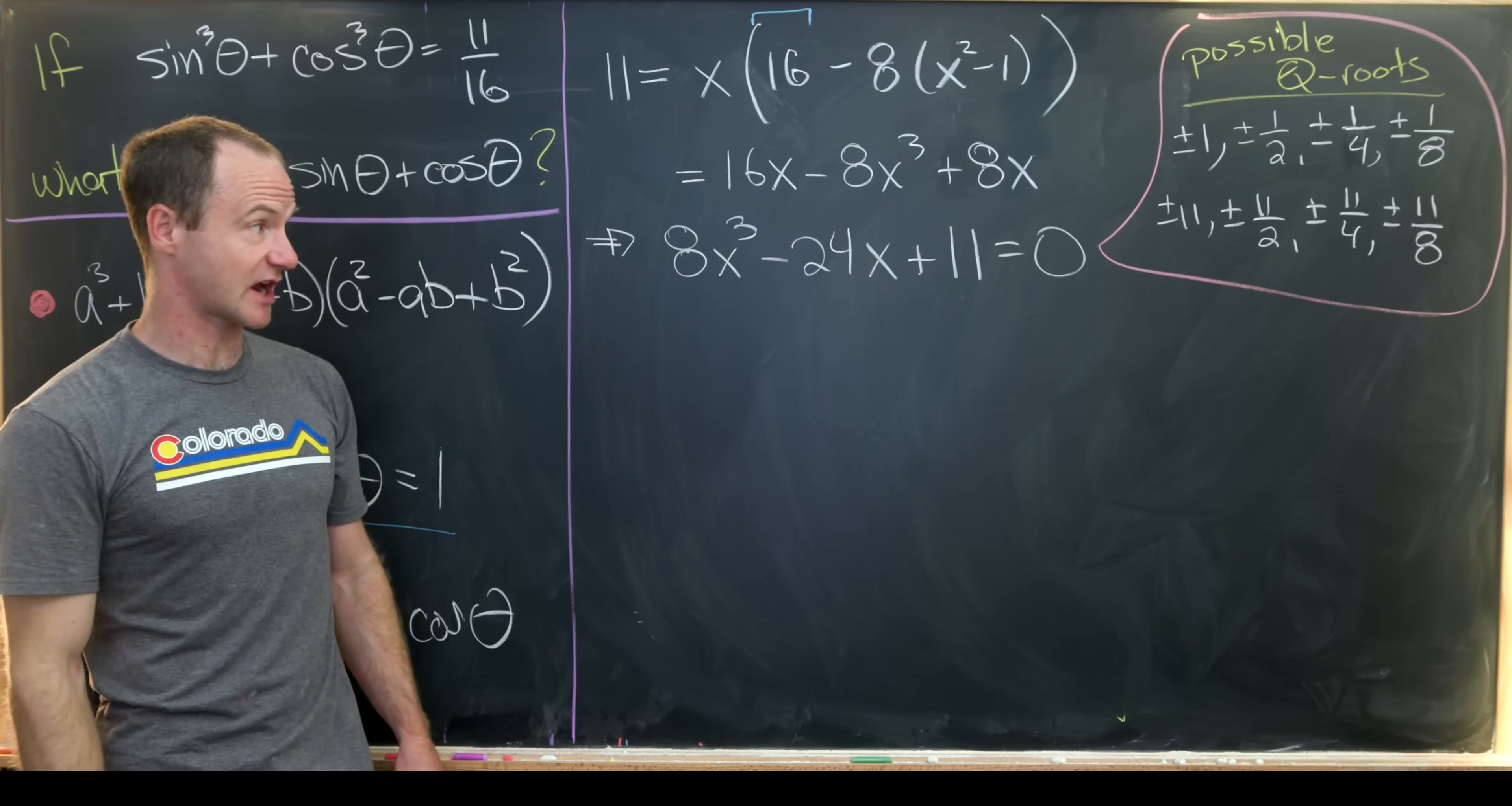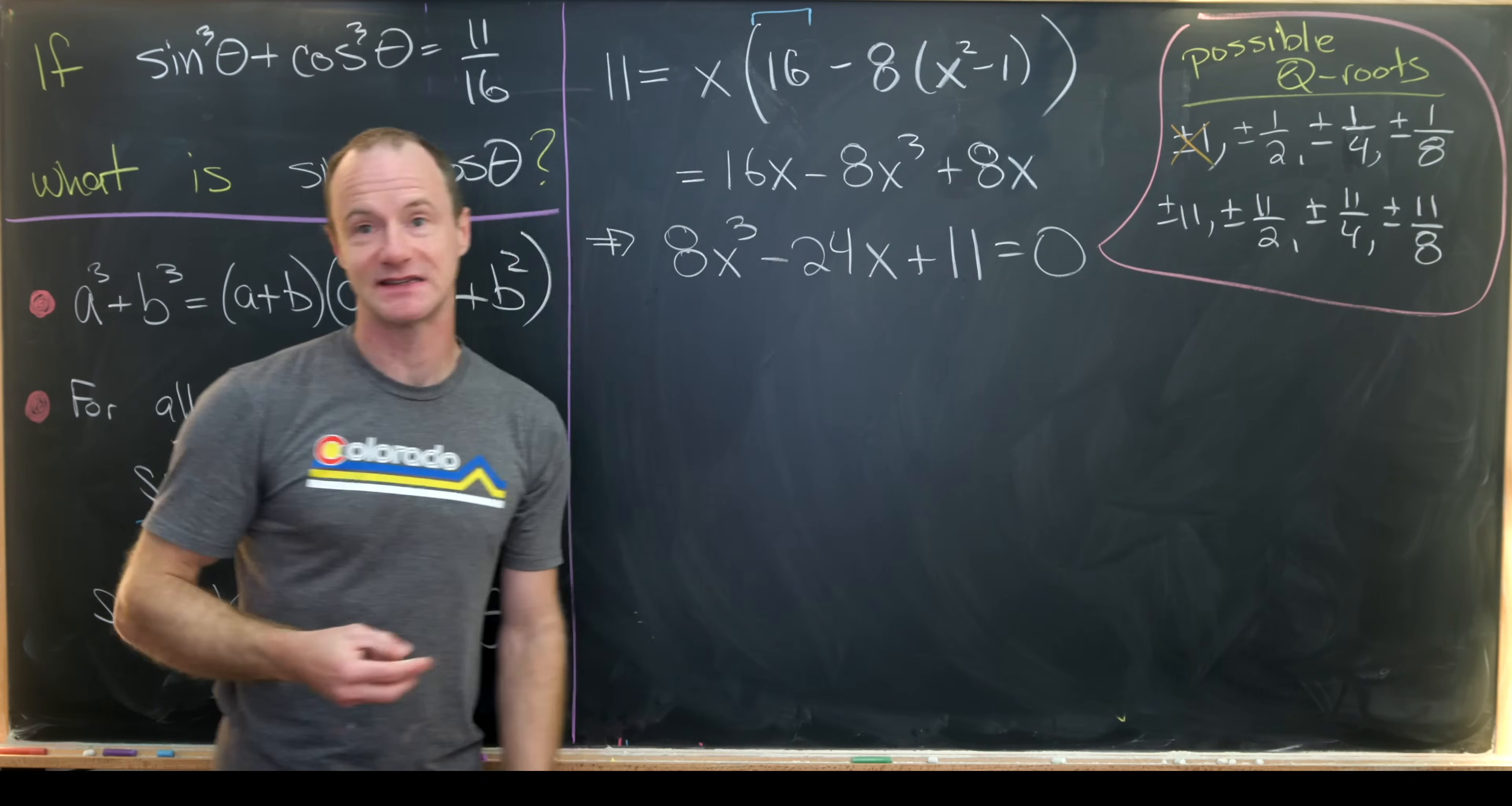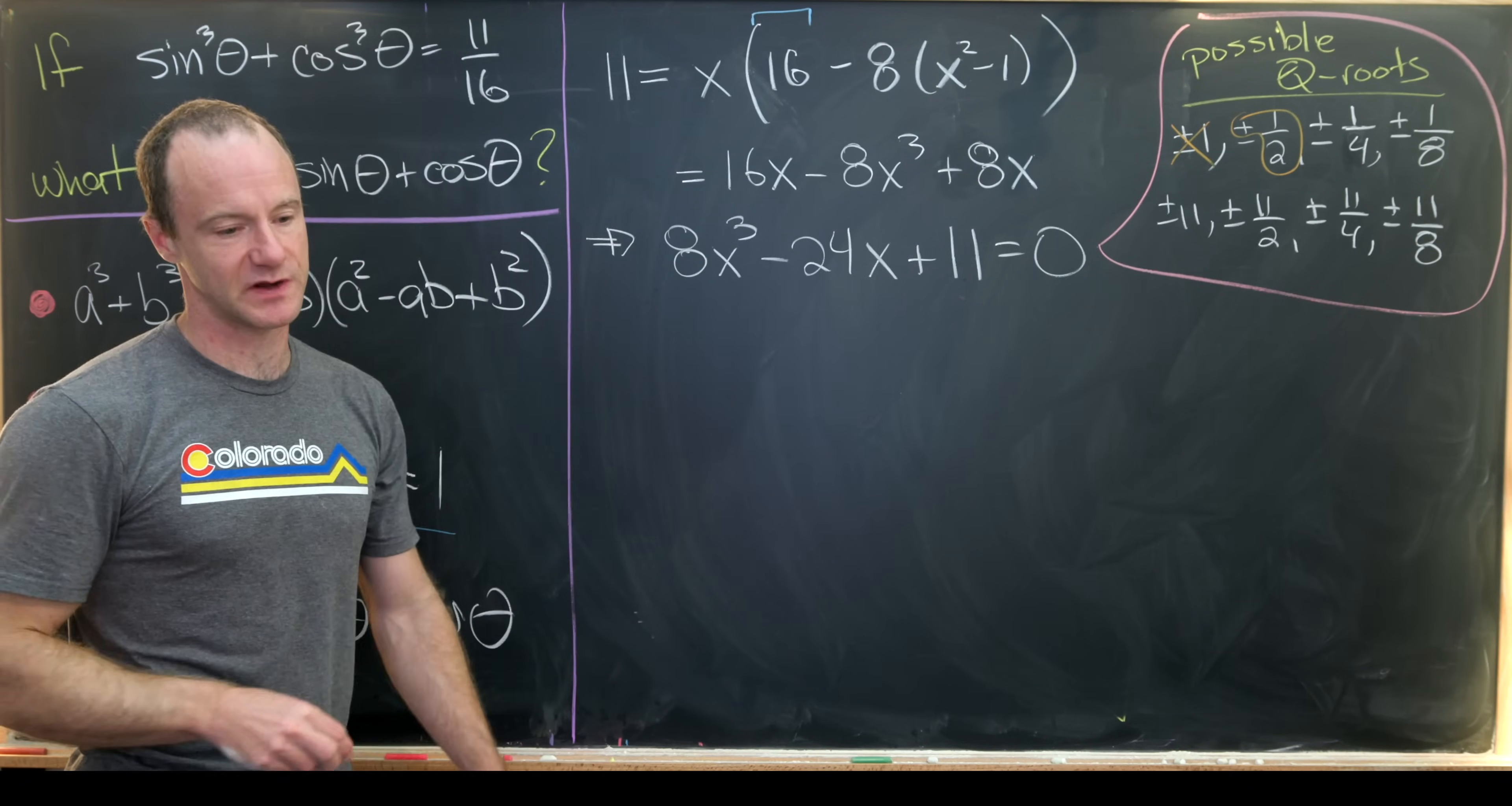So there's quite a bit to check there. But it's easy to check that plus minus 1 does not give us a solution. And so that means we should move on to plus minus half. And by a quick check, you'll see that plus 1 half is a solution to this polynomial equation.